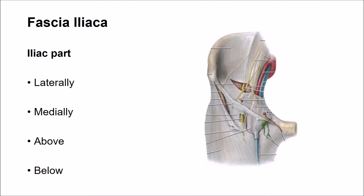Below, the fascia lateral to the femoral vessels is connected to the inner aspect of the inguinal ligament, where it blends with the fascia transversalis of the anterior abdominal wall. Opposite the femoral vessels, this fascia enters the thigh and forms the posterior wall of the femoral sheath. Medial to the femoral vessels, this fascia is attached to the rectus pubis.